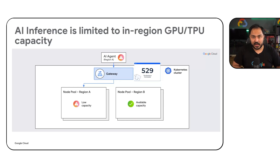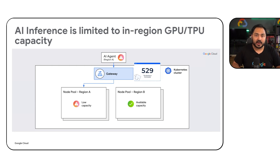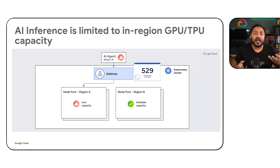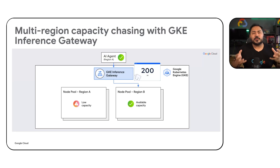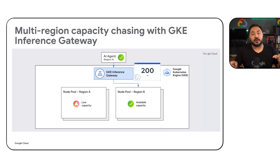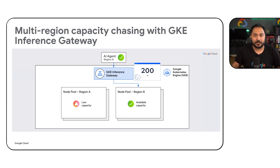GPUs and TPUs are highly in-demand resources that are often low on capacity in different regions. Currently, if you target a specific region and that region is low on capacity, applications need to have routing logic built internally to redirect elsewhere. With GKE Inference Gateway, you can pull capacity across multiple Google Cloud regions — in case of capacity issues in the primary region, the gateway automatically routes the request to an alternative region with available capacity, enabling high-scale AI services that are resilient to demand surges and regional capacity issues.